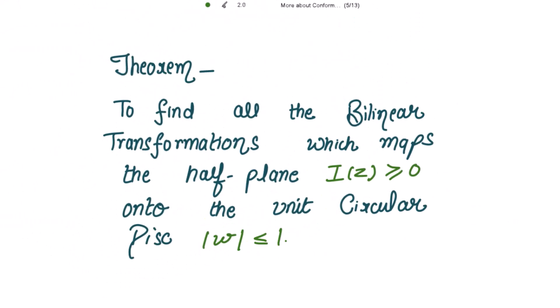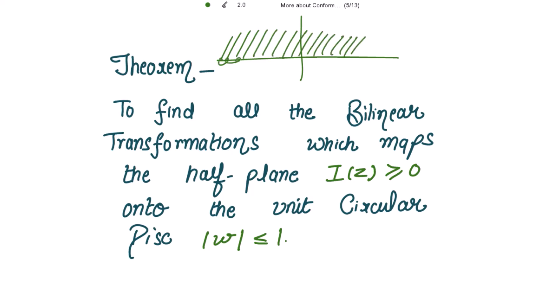The theorem is to find all the bilinear transformations which map the upper half plane Im(z) greater than or equal to zero — that is, the region above the real axis including the real axis — onto the unit circular disk |w| less than or equal to one, which means the interior points and also the points on the circle in the w-plane.